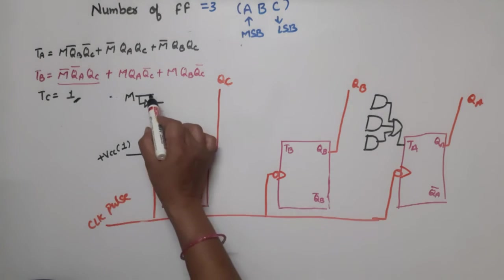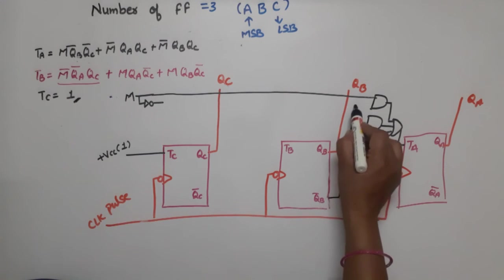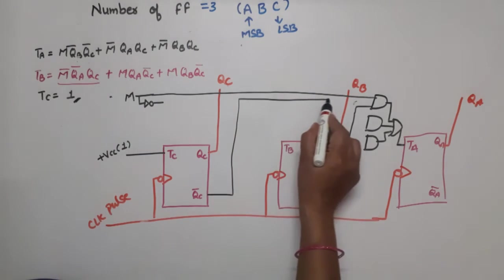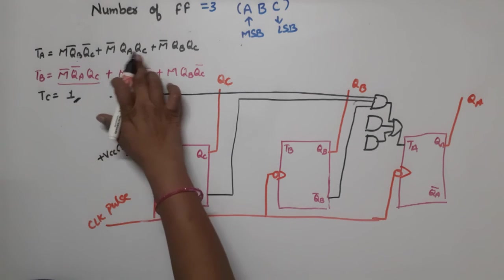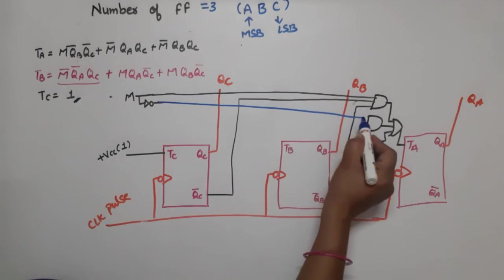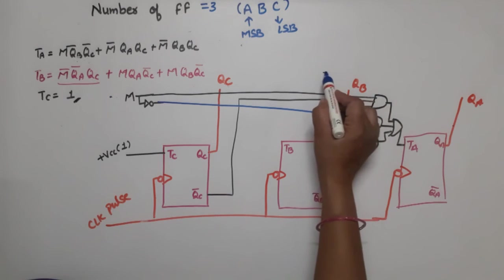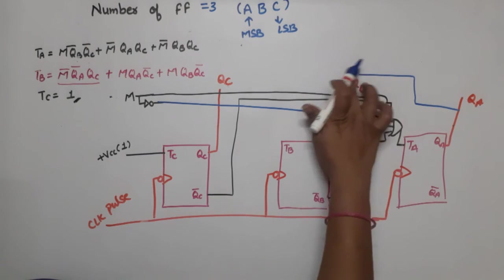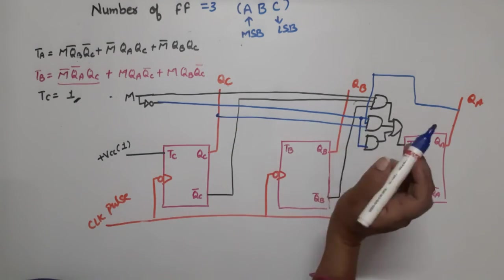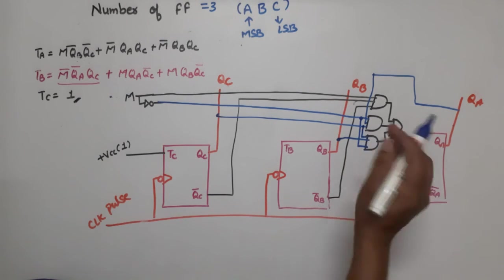For the TA connections: the first AND gate takes QB-bar, QC-bar, and M. The second AND gate takes M-bar, QA, and QC. The third AND gate takes QB and QC. All outputs go to an OR gate whose output connects to TA. Connecting the wires: QB-bar from the QB-bar output, QC-bar from the QC-bar output, M and M-bar appropriately, QA and QC as feedback lines.